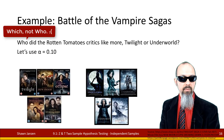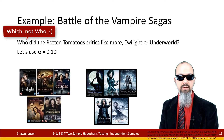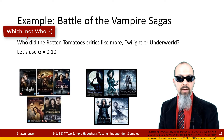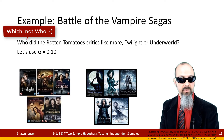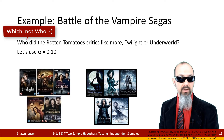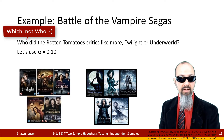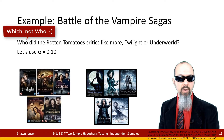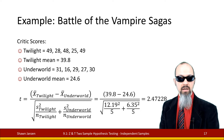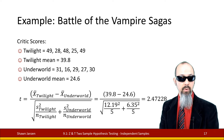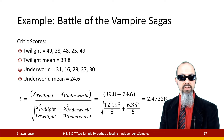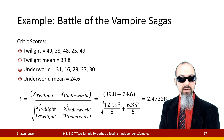Let's do a quick mathematical example — what I call the Battle of the Vampire Sagas. We'll use Rotten Tomatoes data to see if critics differ in how much they like Twilight or Underworld. With an N of 10 — five movies in each saga — we'll use an alpha of 0.10. The critics' scores for Twilight are 49, 28, 48, 25, and 49, with a mean of 39.8. The Underworld movies are scored 31, 16, 29, 27, and 30, with a mean of 24.6.